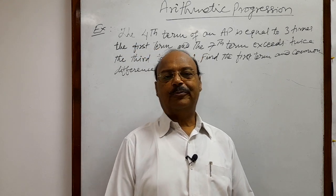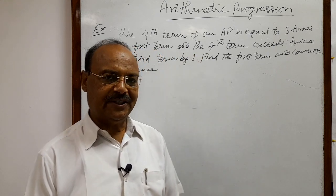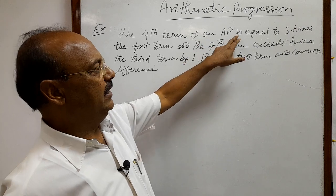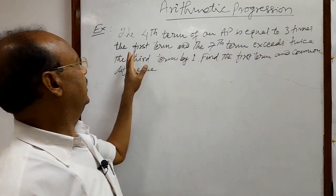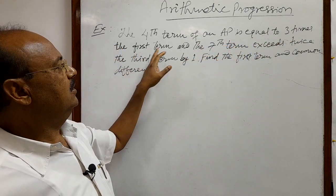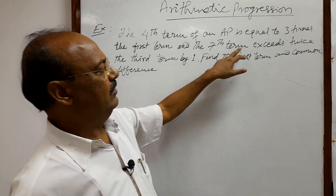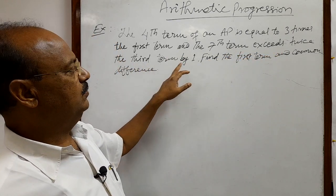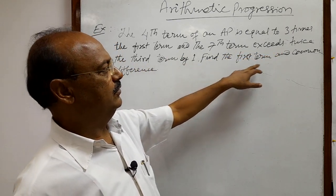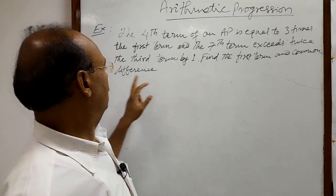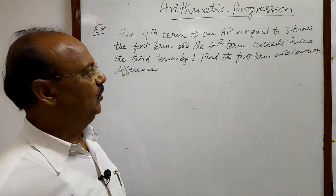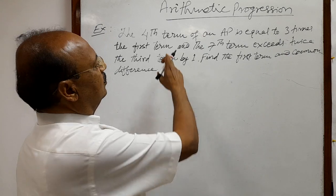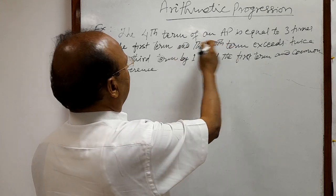Here we will see a question from the topic arithmetic progression. The question is: the fourth term of an AP is equal to three times the first term, and the seventh term exceeds twice the third term by one. Find the first term and common difference of the AP.